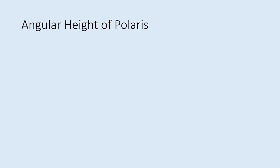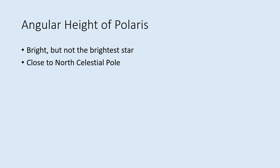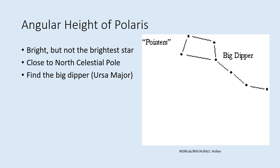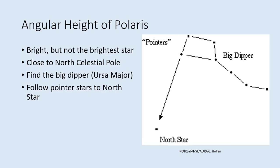The other measurement we need to make is of the angular height of the North Star, Polaris. Note that the North Star is not the brightest star in the sky, though it is a fairly bright star. Its most important property is its location, within one degree of the North Celestial Pole, which means it stays stationary in the sky as the Earth spins. As you look towards the north, start by finding the Big Dipper, part of Ursa Major. Imagine a line going through the pointer stars — the two stars at the end of the bowl — and follow this line until you come to the next bright star. That's the North Star. Once you've found it, use your astrolabe to measure its height above the horizon.